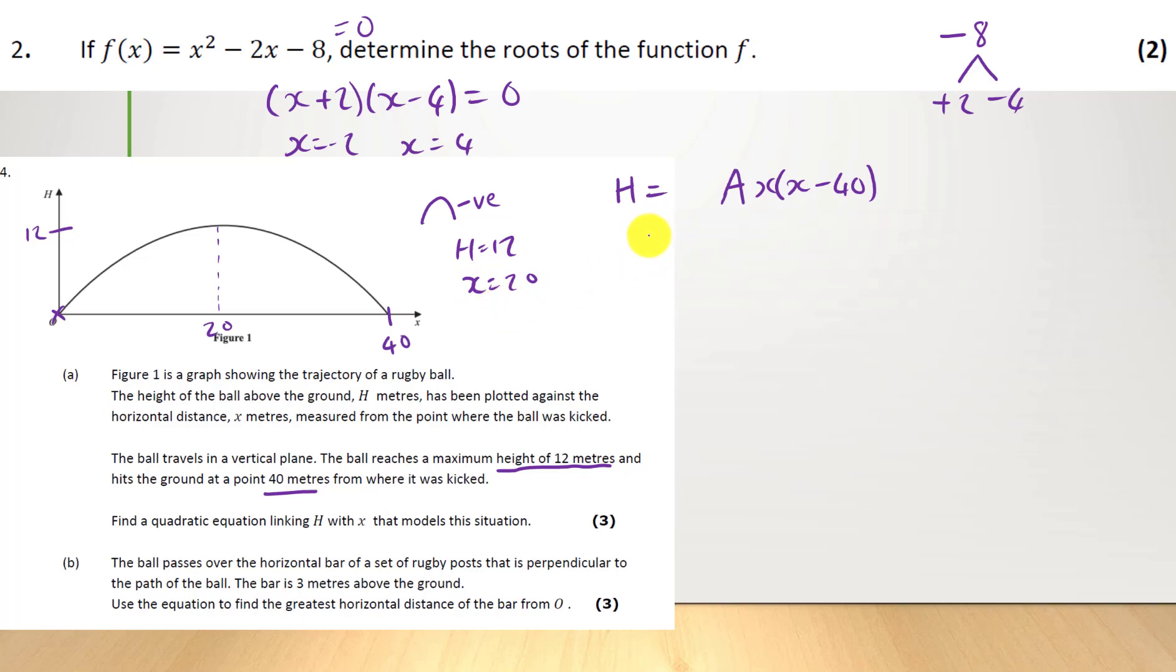So we can substitute this in. So 12 equals A or 20A, 20 minus 40. So that's going to give us 12 equals 20A times minus 20, which is going to give us 12 equals minus 400A. So A is going to equal minus 3 over 100 once you divide that through.